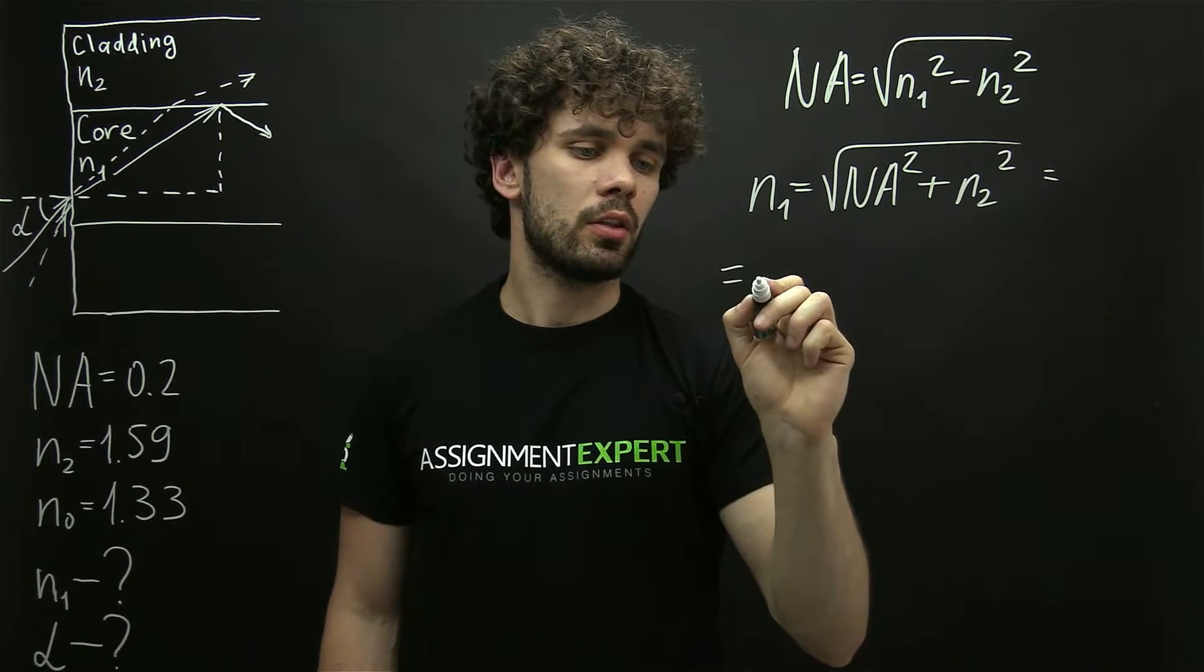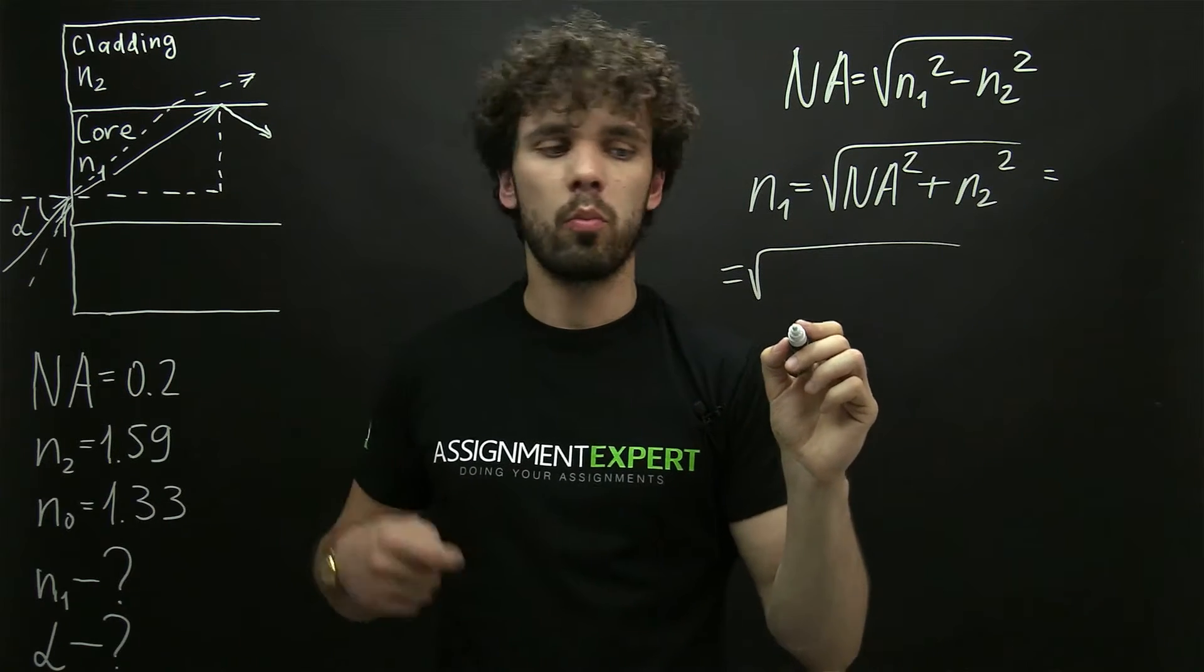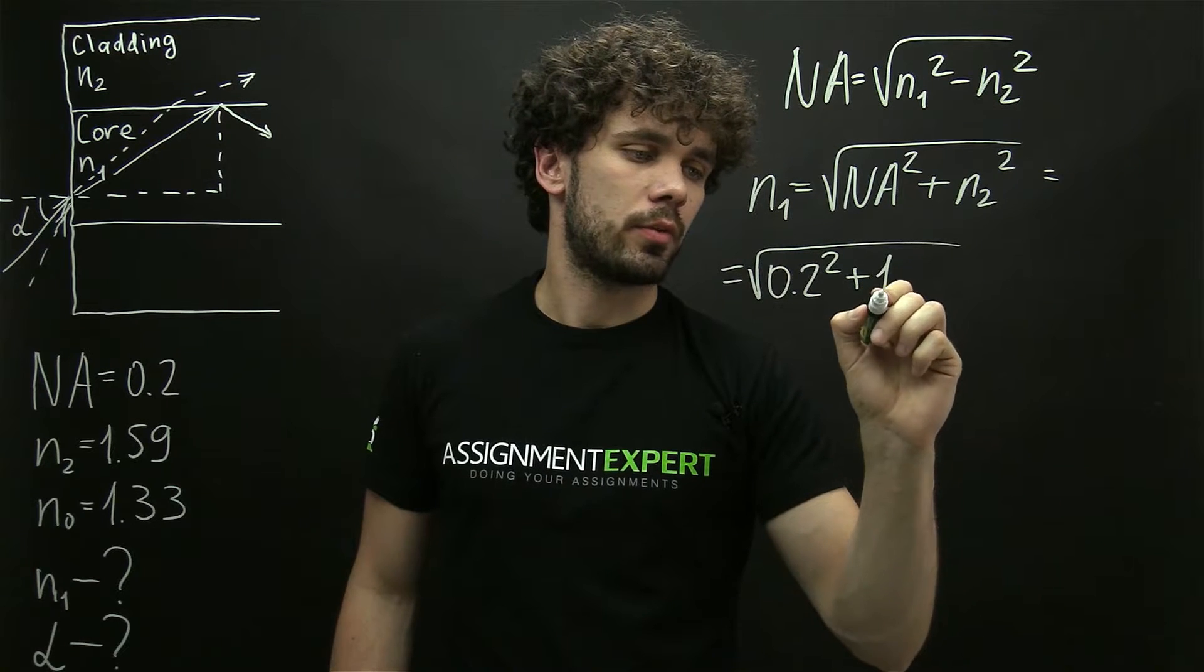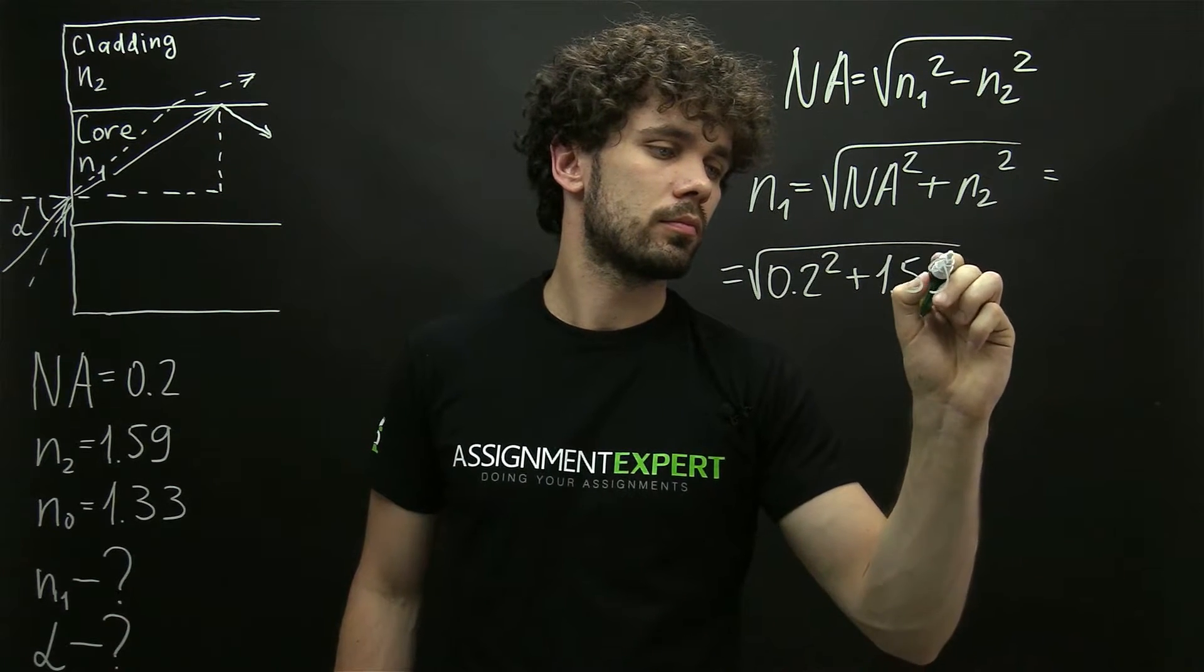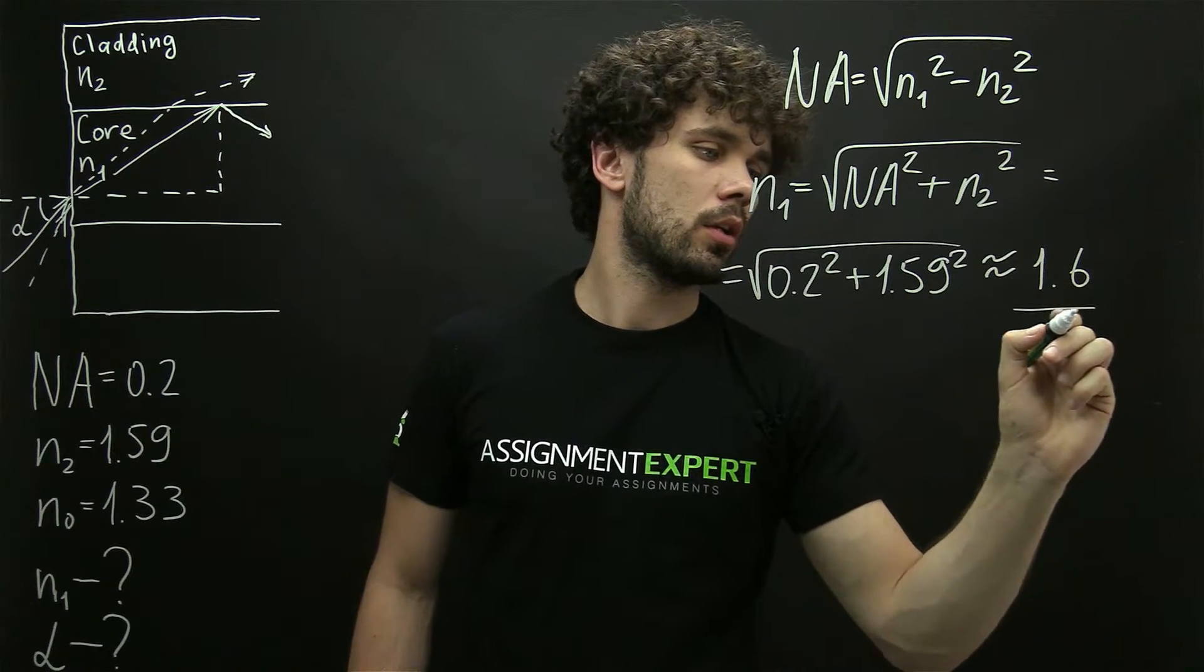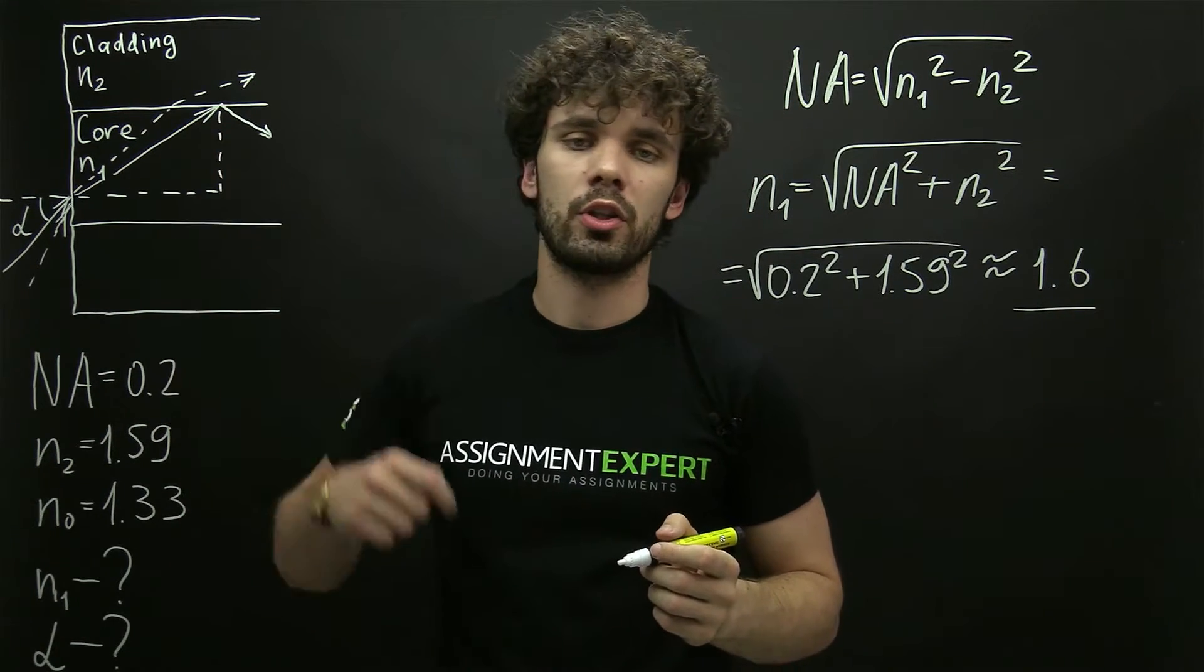In our case this is the square root of 0.2 squared plus 1.59 squared and this is approximately 1.6. So here we found the refractive index of the core material.